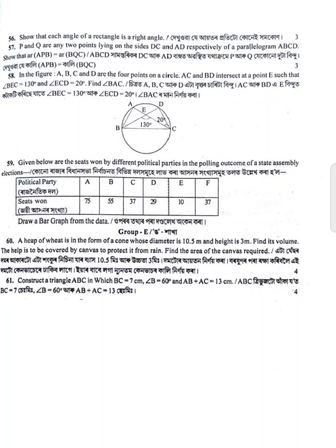A heap of wheat is in the form of a cone. The diameter is 10.5 meters and the height of the cone is given. Find its volume. Also find the area of the canvas required to cover the heap in order to protect it from the rain.